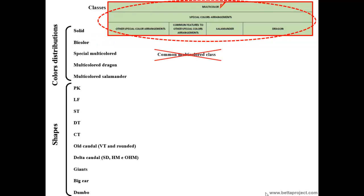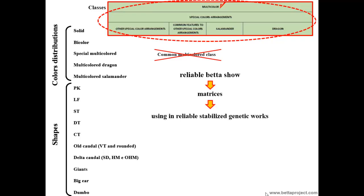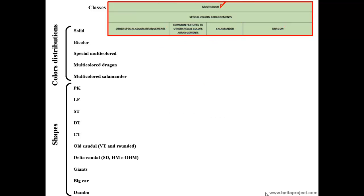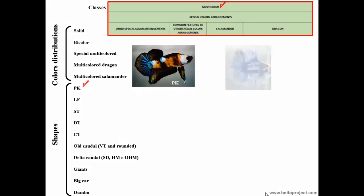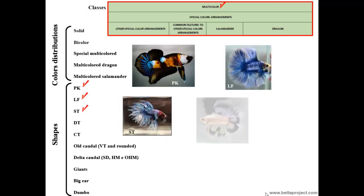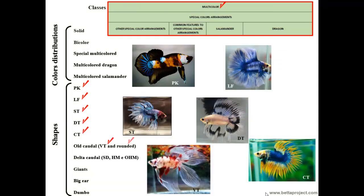Let us explain. As this work is based on the premise that a reliable betta show is prepared to evaluate matrices for use in reliable stabilized genetic works involving color distribution, it is important to note that any common multicolored betta cannot be used as a matrix for reliable genetic works. Therefore, this worksheet does not have fields to assess the common multicolored bettas. On the other hand, these common multicolored bettas should only be assessed with regard to format questions, by fraternization among common multicolored betta breeders — for example, the best half moon, the best giant, etc. However, even if awarded, these bettas should not be used as matrices for works that require stability in color arrangements.